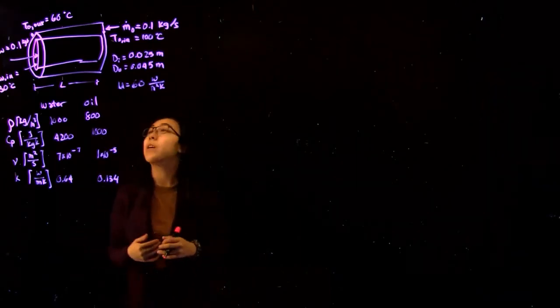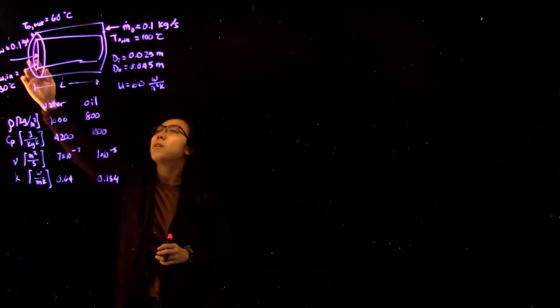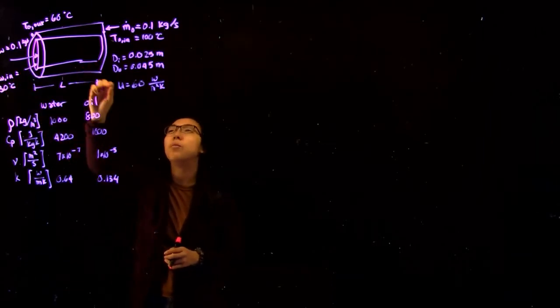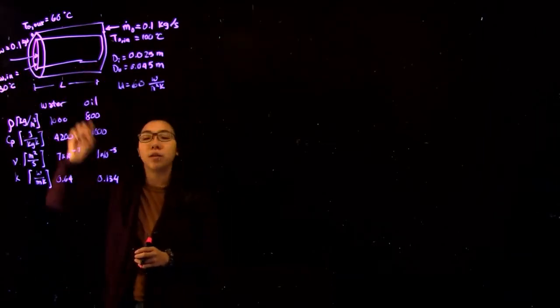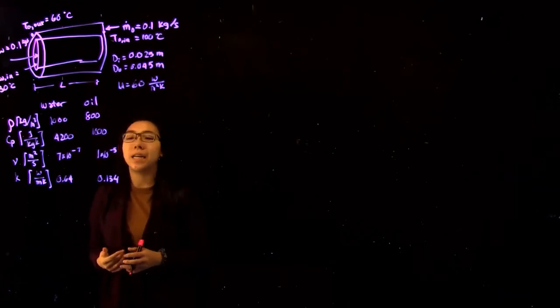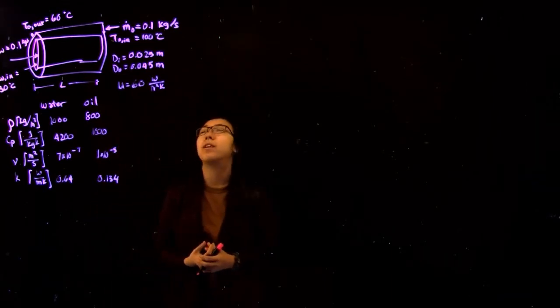Here we're given a counter-current heat exchanger where we have water being heated flowing in the center of the tube at a mass flow rate of 0.1 kilograms per second and an inlet temperature of 30 degrees Celsius.